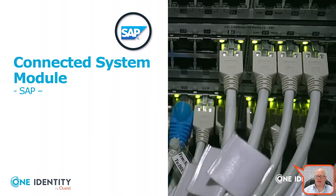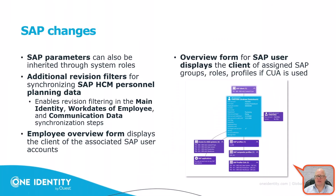For the SAP system: parameters can now also inherit through system roles — previously only business roles could do so. There are also more revision filters available, especially for synchronization of SAP HCM personal planning data, allowing filtering of revisions for main identities, work dates of employees, and communication data, which speeds up synchronization. On the employee overview, you will now see the client of associated SAP user accounts, and on the SAP user overview, the client of assigned SAP groups, roles, or profiles — when CUA is used.